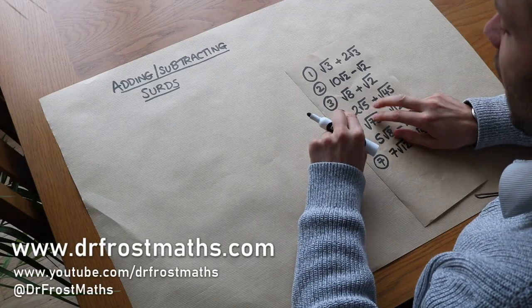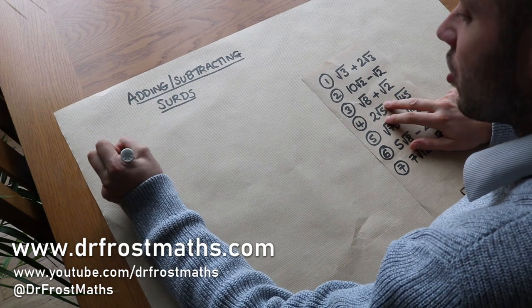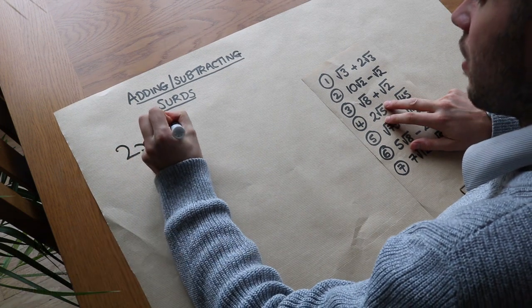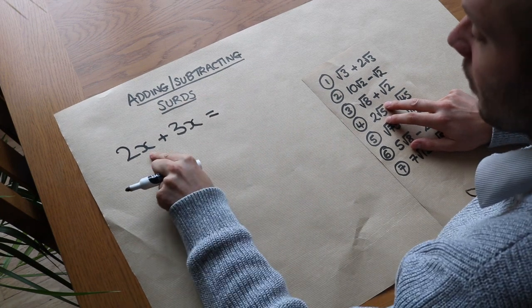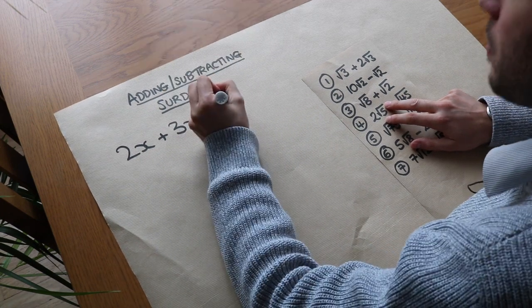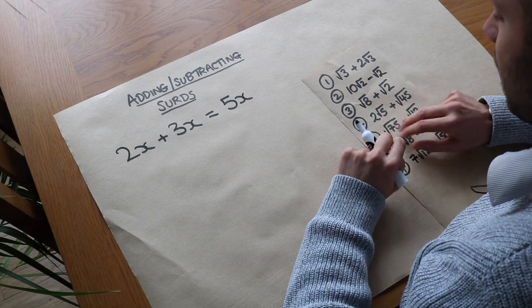Hello and welcome to this video on adding and subtracting surds. Now let's just say I had 2x and I added 3x, what do I get? Well we could think of this as 2 lots of x plus 3 lots of x, which would be 5 lots of x. So those two terms would just collect and we get this.